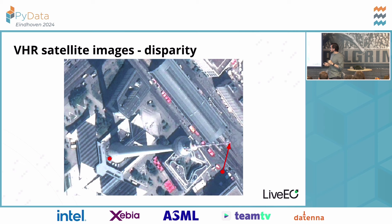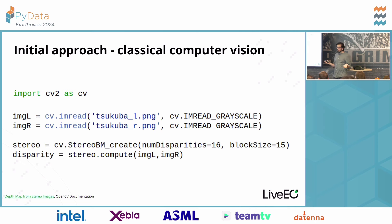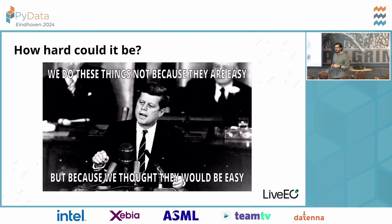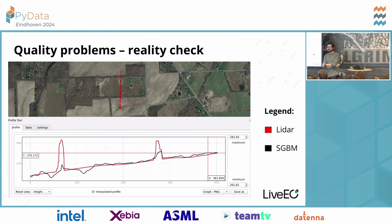Stereo vision is a well-studied problem in computer vision. You can do it in effectively five lines of Python using OpenCV's Semi-Global Matching algorithm. So straightforward, right? Nothing can ever go wrong. We thought this would be relatively easy — that was our first attempt — and we found out it's not that easy when you get down to it. This was our first dose of reality.